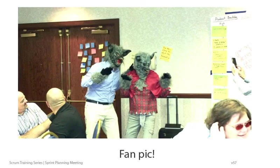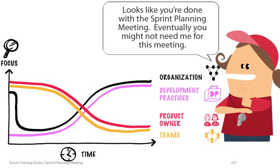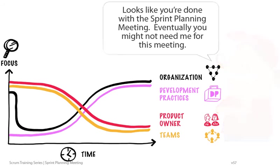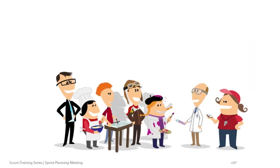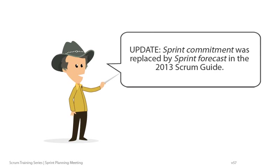I was working with a company in Miami when a couple of managers who'd seen this e-learning decided to storm the training room dressed as wolves. Looks like you're done with the sprint planning meeting. Eventually, you might not need me for this meeting. Note that sprint commitment was changed to sprint forecast in the 2013 Scrum Guide because the idea of commitment was being abused.